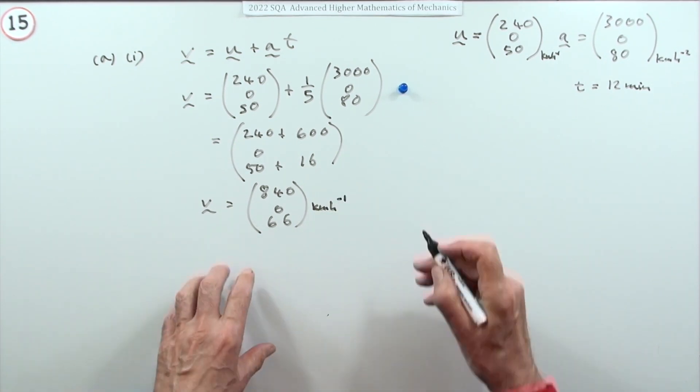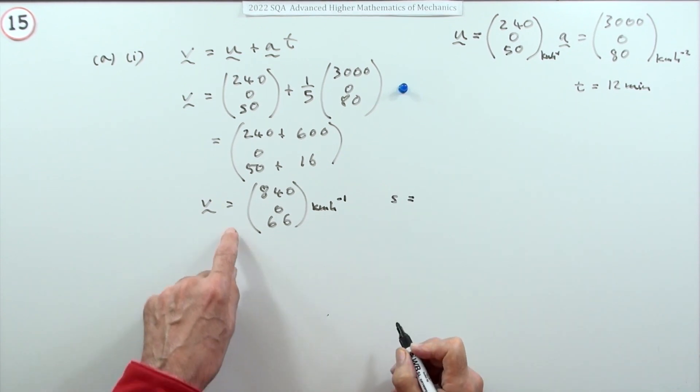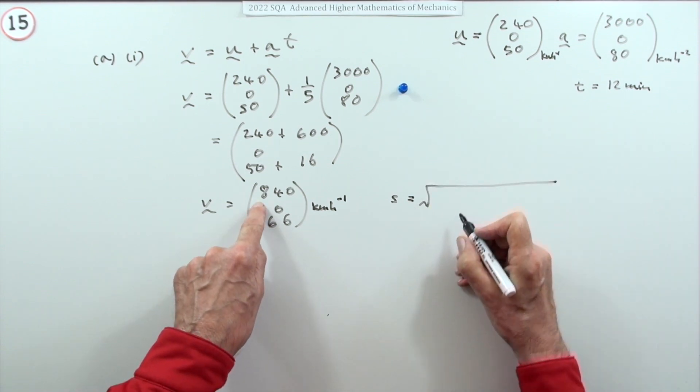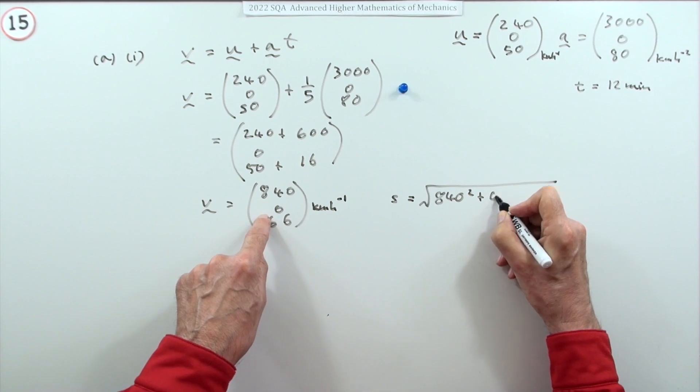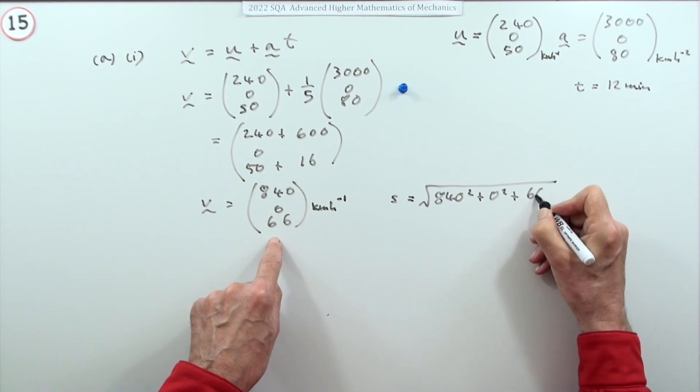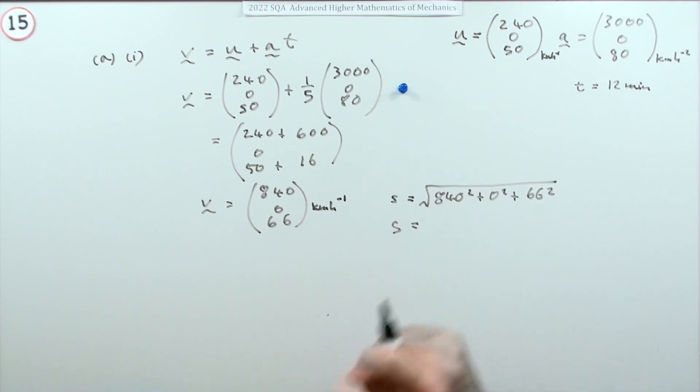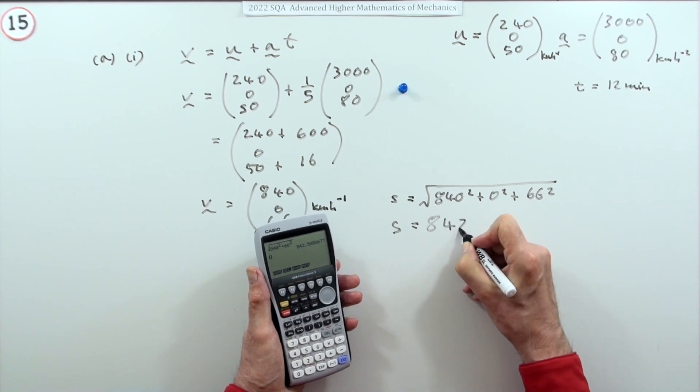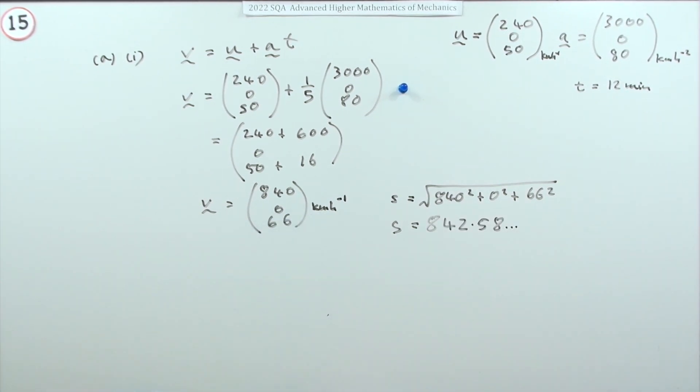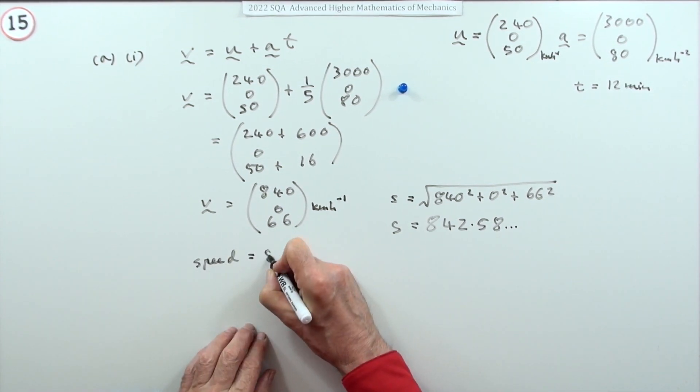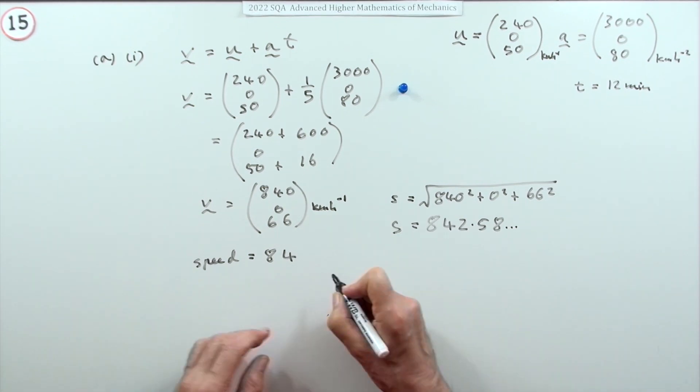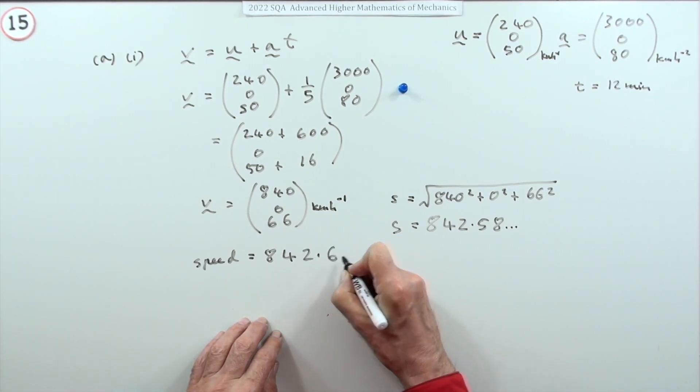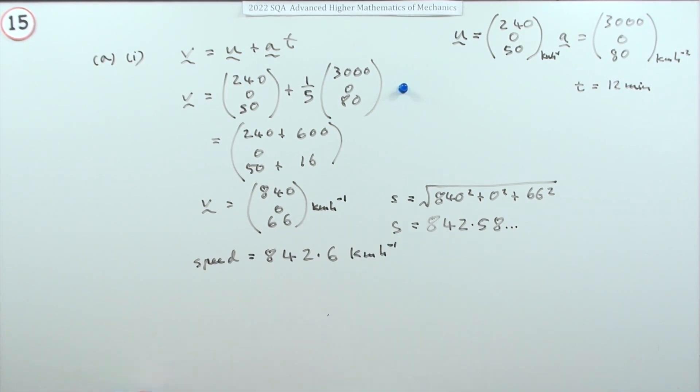So the velocity vector after 12 minutes is (840, 0, 66) kilometers per hour. That doesn't get the mark because you want the speed. The speed is the magnitude of the velocity, so you have to do that three-dimensional Pythagoras: square root of 840 squared plus 66 squared. That gives 842.588. So speed equals 842.6 or 843 kilometers per hour for a mark.